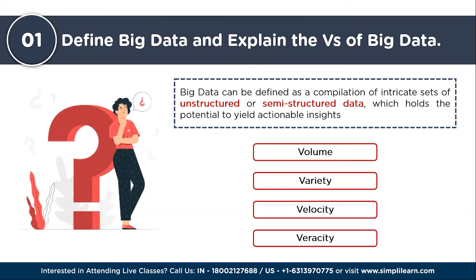The next is Variety — this emphasizes the diverse range of formats and types in which data is presented. Big data encompasses structured, unstructured, and semi-structured data from various sources. The next is Velocity — referring to the speed at which data is generated and must be processed; the velocity dimension underscores the need for real-time or near real-time data analysis. And Veracity highlights the reliability and trustworthiness of the available data — inaccurate, inconsistent, or uncertain data can adversely impact the quality of insights derived from big data analysis.